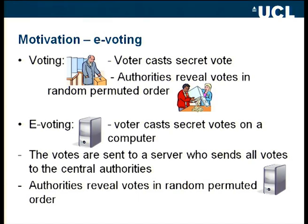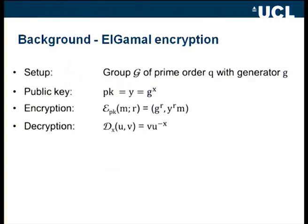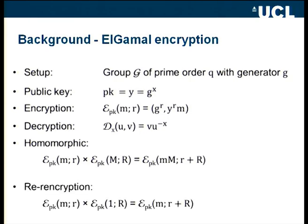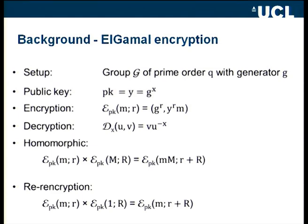To have a safe and secret vote we have to decrypt our votes, so we use El-Gamal encryption. The property we are most interested in is the homomorphic property: if we have two ciphertexts and multiply them together, we get a new ciphertext which contains the product of the original messages. With this we can define the re-encryption operation — we take a ciphertext and produce a new ciphertext containing the same message but looking completely different, by multiplying the original ciphertext by a random encryption of one.